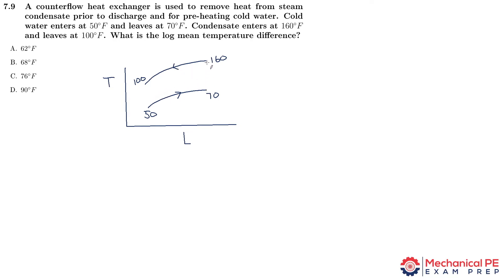Even though the delta T is changing — it's 50 over here and 90 over here — it's closer to the average the entire time. Whereas for a parallel flow heat exchanger, it's extremely large right at the point when it enters, and it's at its smallest — potentially quite small — right at the very end. So it's just a different design.